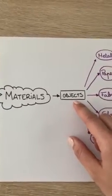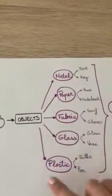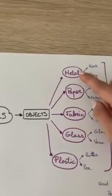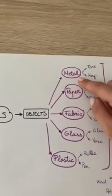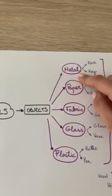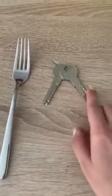Some of these materials are, for example, this that we have here. Let's go little by little. One material is metal. Some things that can be made of metal are, for example, a fork or a key.